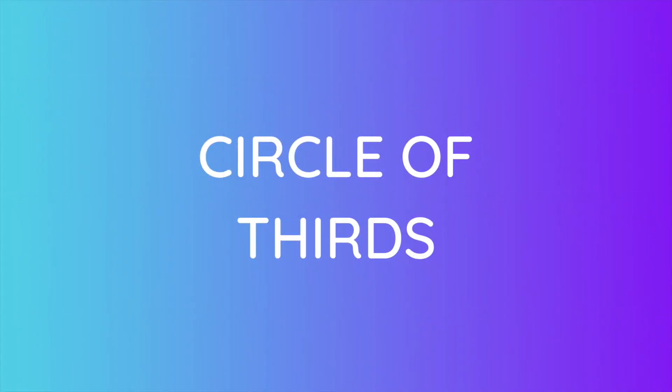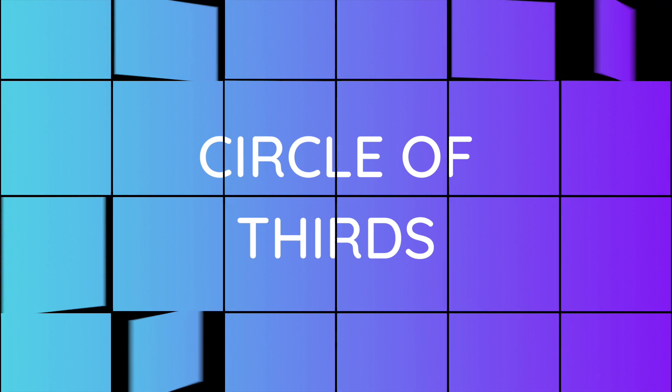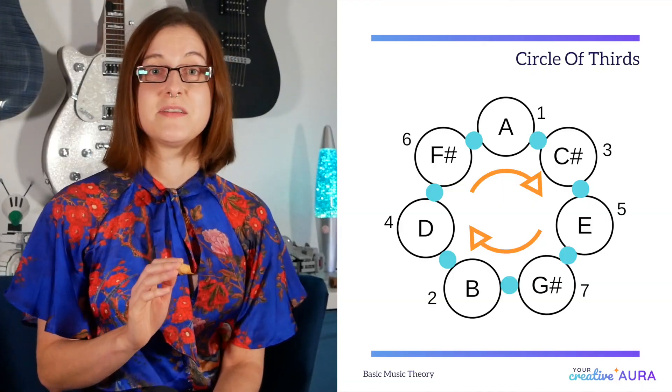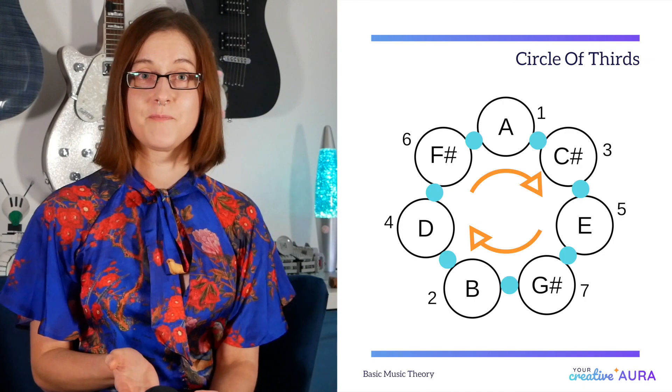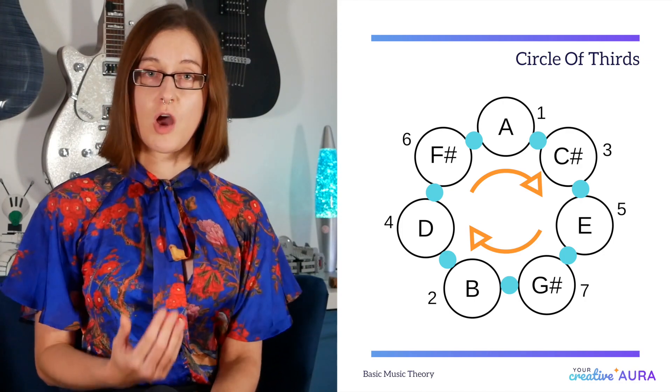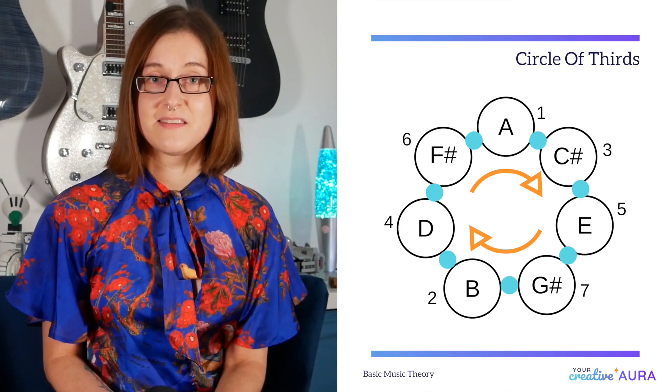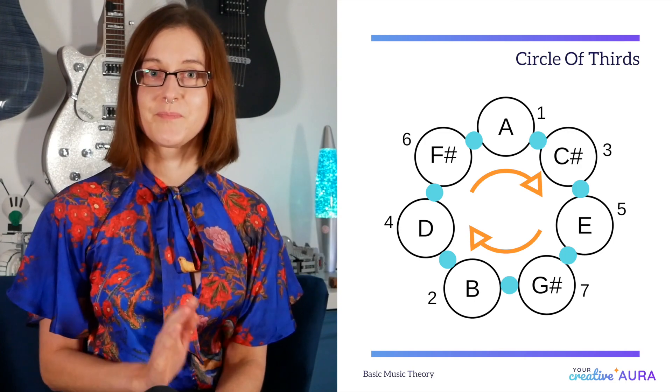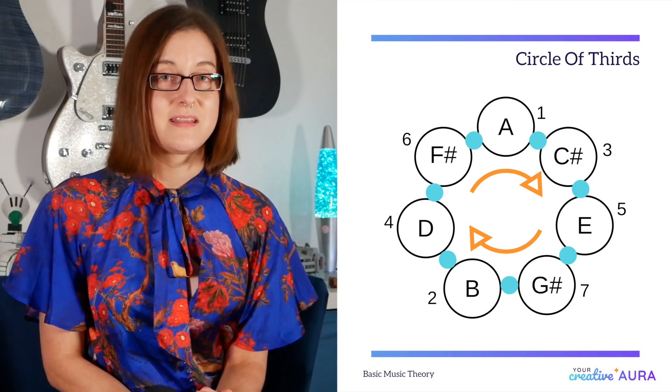Triad chords — circle of thirds. A triad is a three-note chord that is built on the circle of thirds. The circle of thirds applies to major and minor scales and is built by entering the major or minor scale in a 1-3-5-7-2-4-6 format. Each number corresponds to its position in the scale, its scale degree. Our example is A major.